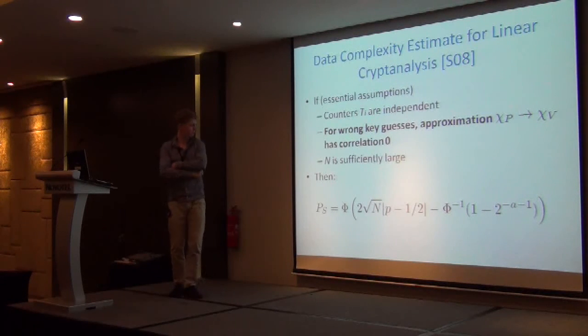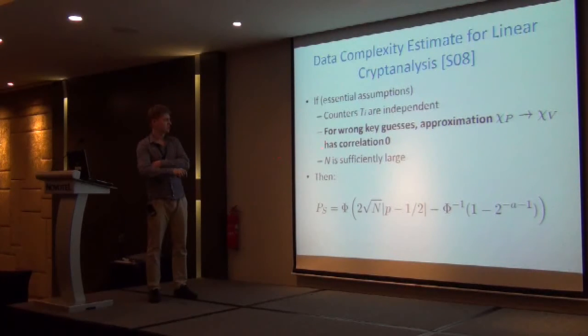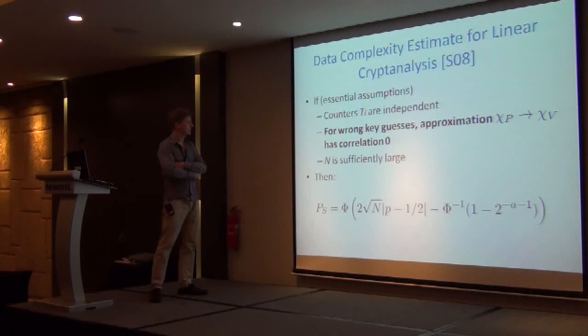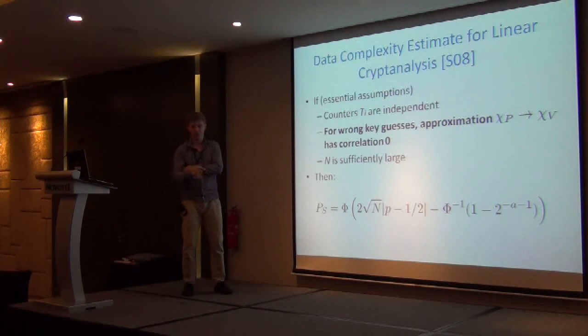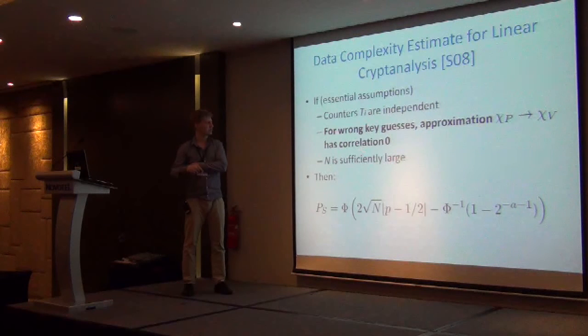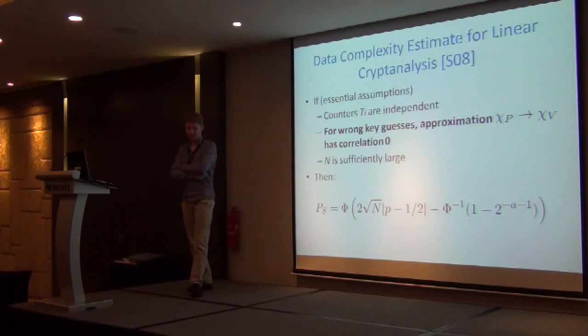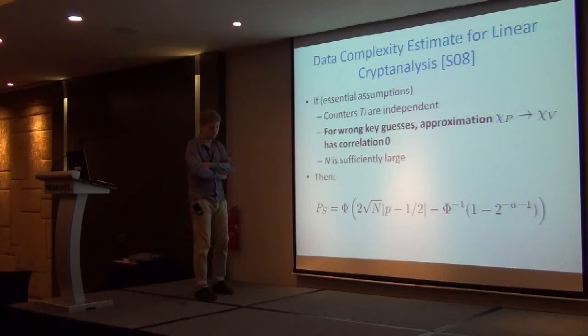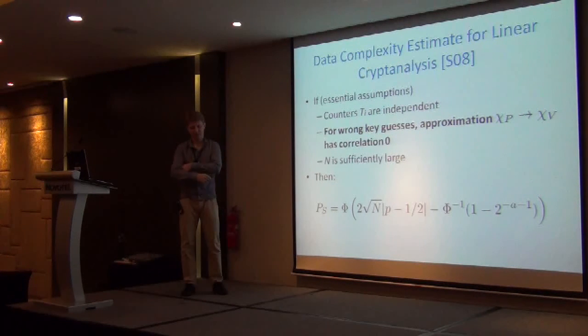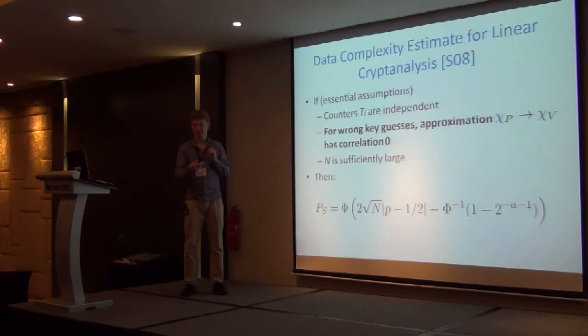And then Selchuk proposed this formula for the estimation of the success probability of the attack, which combines the data complexity, the bias or correlation, and the advantage. This combined all together gives you usually a nice curve for your complexity. But it's based on several essential assumptions. First of all, all the counters are independent. But secondly, and it's exactly the point that we'll be drilling, here is that for wrong key guesses the approximation has correlation zero, or that the approximation for wrong key guesses is unbiased by the standard.